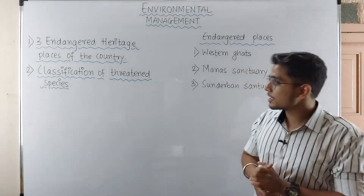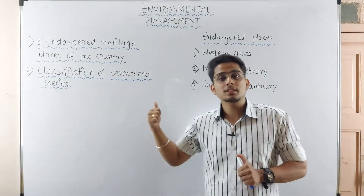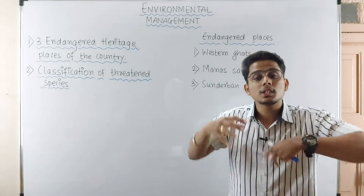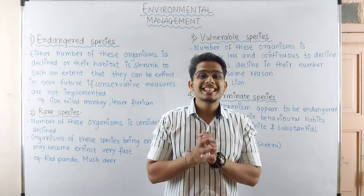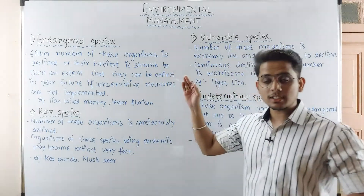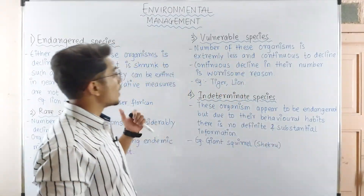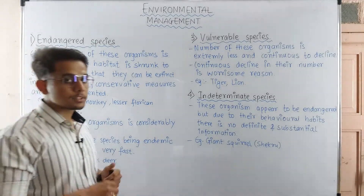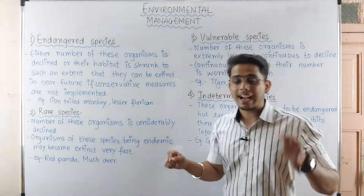Now we will see the classification of threatened species — those species that are truly in danger, where the animals can still be seen but are at risk. Threatened species are classified into four forms: endangered species, rare species, vulnerable species, and indeterminate species.